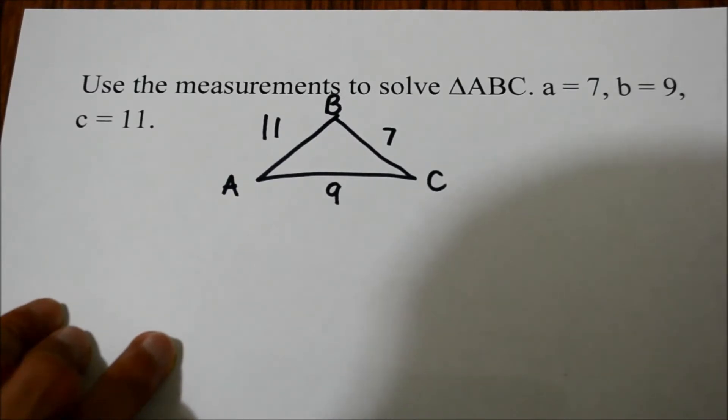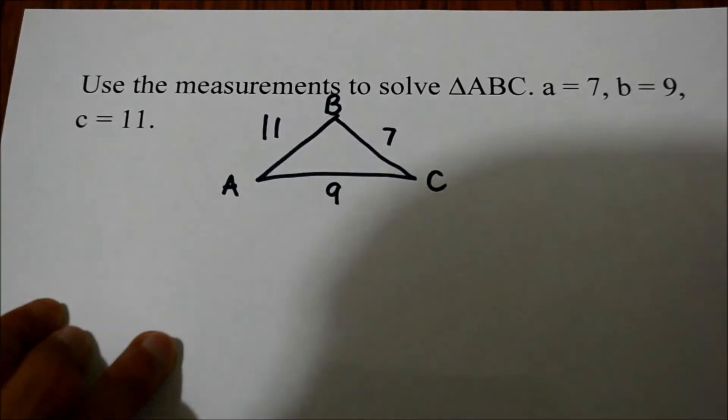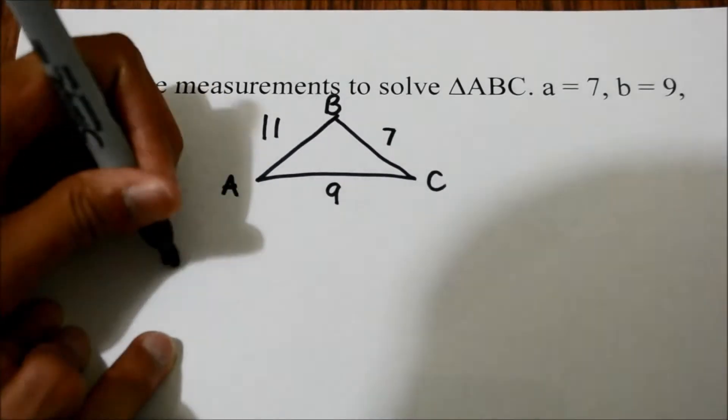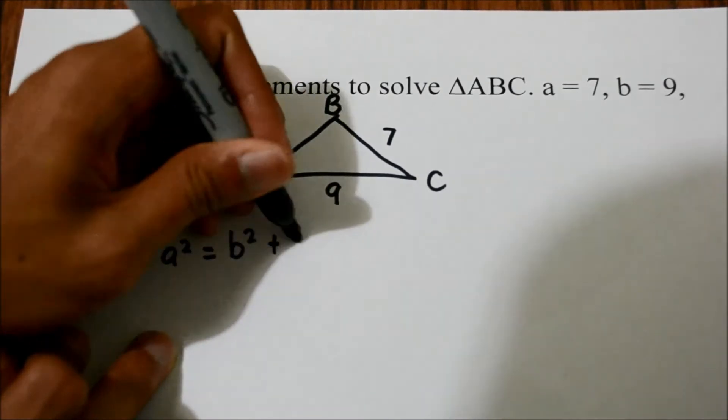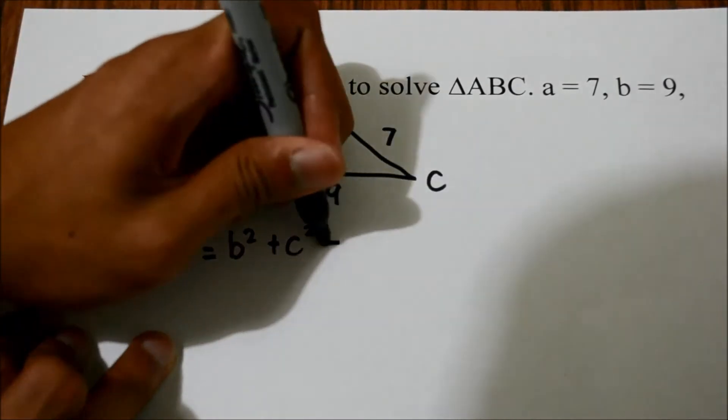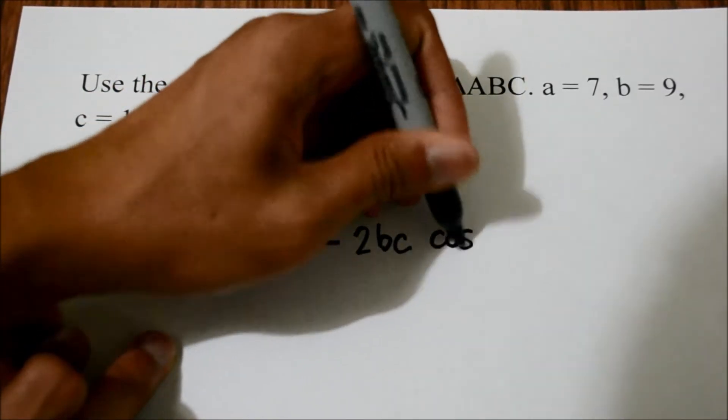It doesn't matter where to start first, so I'm going to find the angle of A. To do that, we are going to use the law of cosines formula, which in this case is a² equals the sum of b² plus c² minus 2 times the product of b times c times the cosine of A.